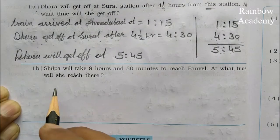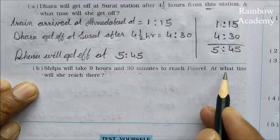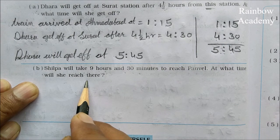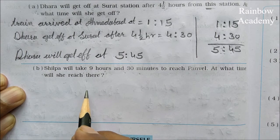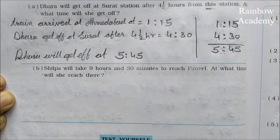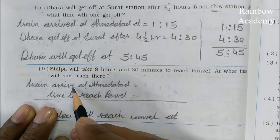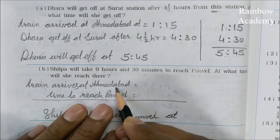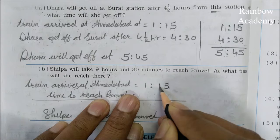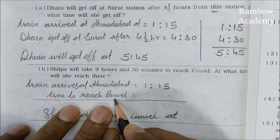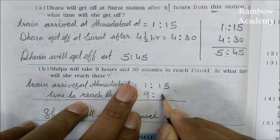Question B: Silpa will take 9 hours and 30 minutes to reach Panwell. At what time will she reach there? The train arrives at Ahmedabad at 1:15. Time to reach Panwell is 9 hours 30 minutes.